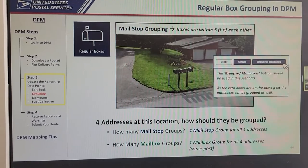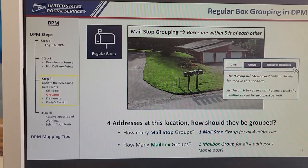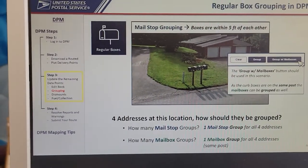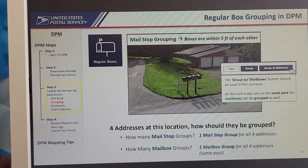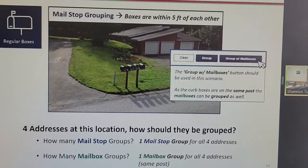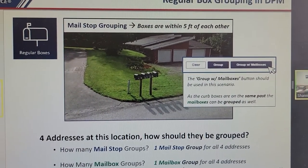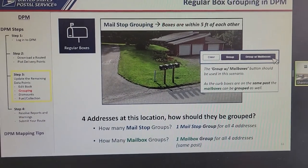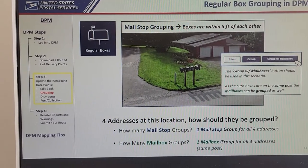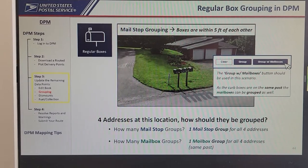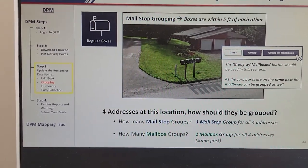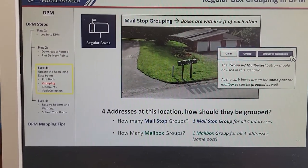Now let's talk about grouping for regular boxes. Mail stop groupings have to occur when boxes are within five feet. Pay close attention: we have to group the DPM — it is the requirement of RECS and it is the requirement of the application. Whether we group four boxes or 400 boxes, the carrier still gets paid for every single box they deliver to, whether it is part of a group or not.